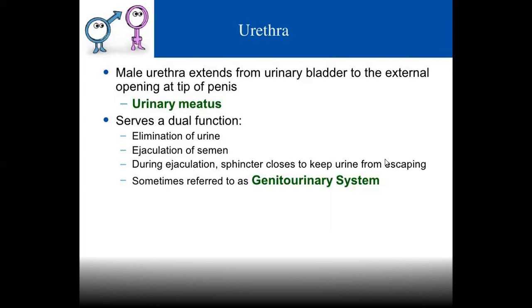During urination, semen doesn't come out; during semen ejaculation, urine doesn't come out. That is why the male reproductive system is called the genitourinary system — because it is linked with the urinary system.